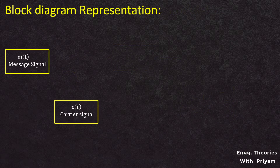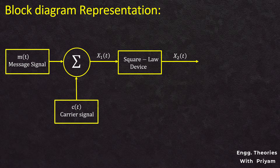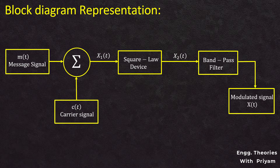In the block diagram, the message signal and carrier signal are given as inputs to the adder circuit, which generates the signal x1(t). This x1(t) is given as input to the square law device, which generates output signal x2(t). The x2(t) is then given as input to the bandpass filter, which finally generates the amplitude modulated signal.